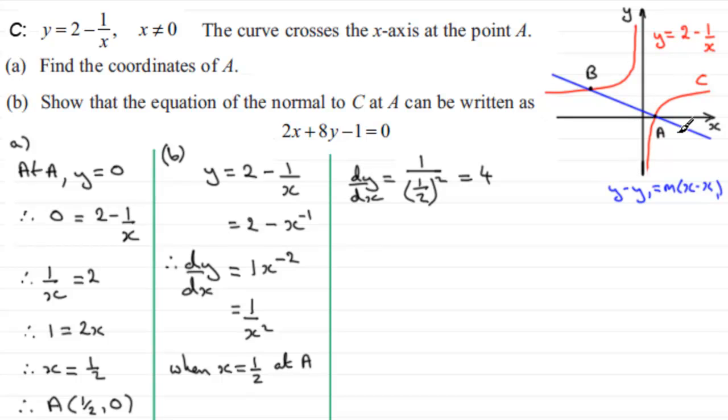Now, we want the gradient of the normal. And we're in a position to get that. So, therefore, the gradient of the normal at A, what's it going to equal? It's going to be the negative reciprocal of this gradient. That would be minus 1 over 4.